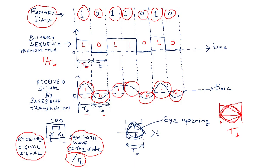When every received waveform at time period Tb is placed on a single interval and you look at the result, it looks like a human eye. The human eye opening is clearly visible, and this allows you to study how inter-symbol interference is occurring, as well as errors in sampling time, noise margin, and amplitude — all of which can be studied with this eye pattern.